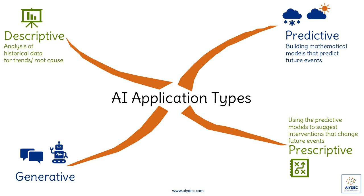Finally, generative AI helps to make sense and indeed produce responses to text, images, audio and video inputs. This area of AI has seen a lot of progress in the last few years. It is probably the most recognized form of AI out there.